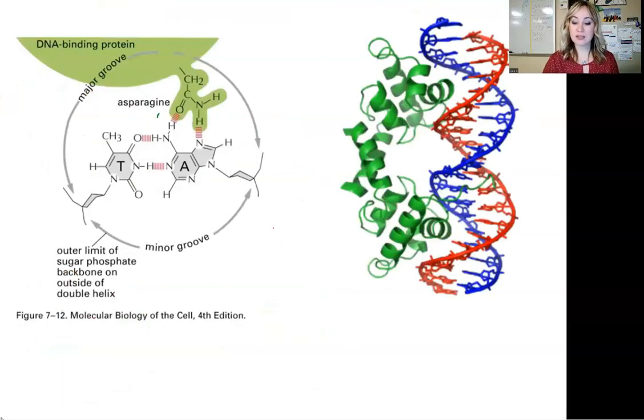Here's another example of a protein. Remember the 3D shape, how it forms helices and beta pleated sheets. This is the DNA molecule, and you can see the interaction with it. In this case, I have a DNA binding protein. We have asparagine here as an amino acid, and the bases T and A.